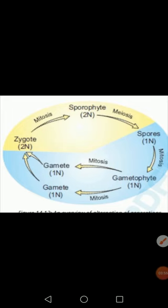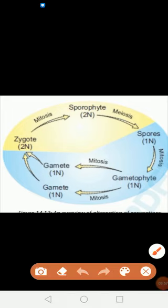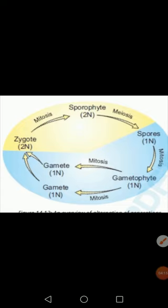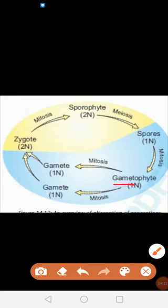This diagram basically shows alternation of generation. The sporophyte generation, which is diploid, produces spores by the process of meiosis. Because meiosis occurs, the sporophyte generation, which is diploid, produces spores which are haploid. Then these spores undergo mitosis and produce the gametophyte generation.